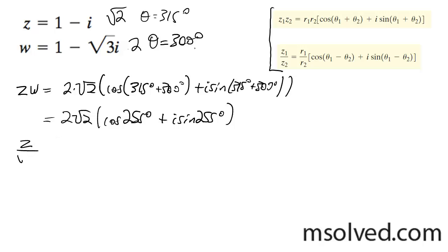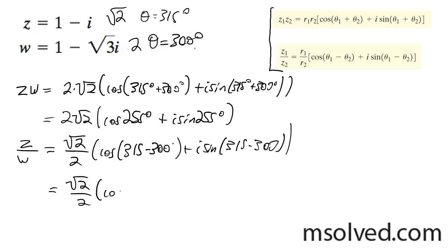For z divided by w, we get root 2 divided by 2, and then we get the cosine of 315 minus 300. Finally, root 2 over 2 times the cosine of 15 degrees plus i sine of 15 degrees. That is it.